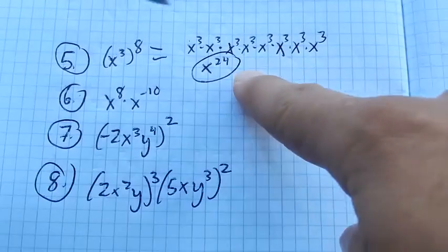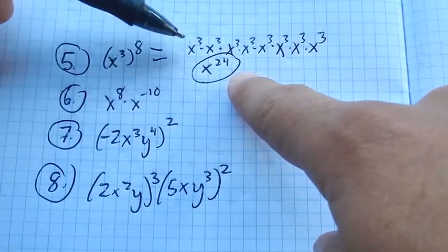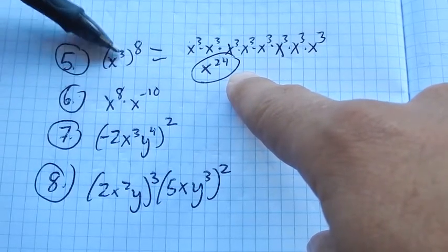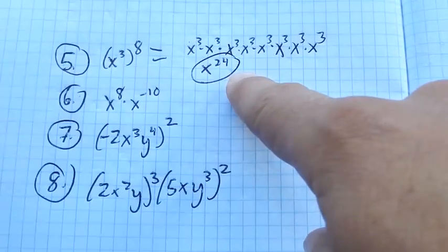Notice that, and some of you are like, why did you write it out like this? Too much work. Notice that I have 8 of these x cubed all multiplied together. So I have x cubed 8 times. So 3 times 8, that gives me 24 x's.